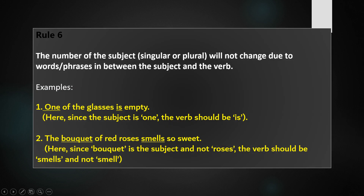Rule 6: The number of the subject, whether singular or plural, will not change due to words or phrases in between the subject and the verb. For example: One of the glasses is empty — one is the subject, not glasses, and since one is singular, the verb is also singular, that is, is. A bouquet of red roses smells lovely — bouquet is a collective noun considered singular, and bouquet is the subject, not red roses, so the verb is singular, that is, smells.